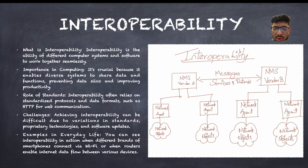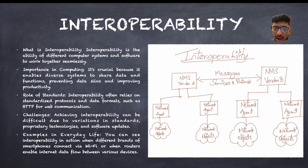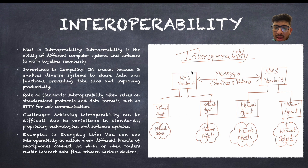Let's say, for example, we take vendor A as Google. So whenever we are taking vendor A as Google, you have a network agent and network objects where you want to share data. So what happens is if two people have Google phones, they are interconnected and you can transfer data inside one network management system. That is what interoperability actually means.